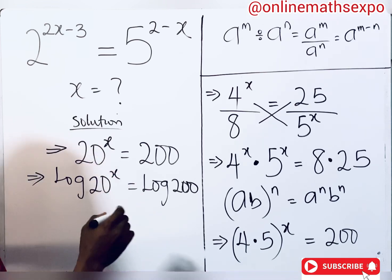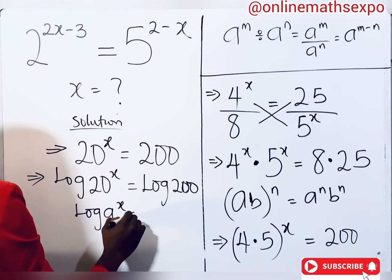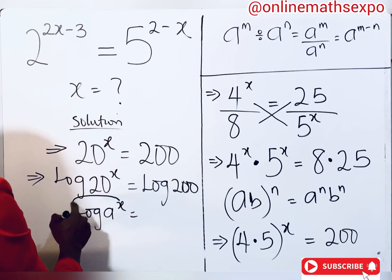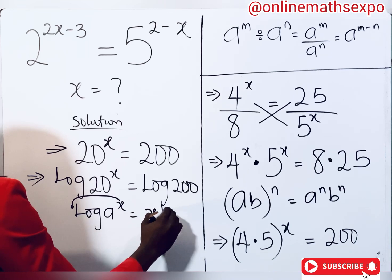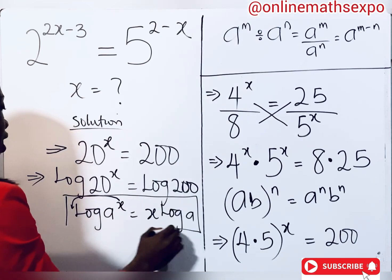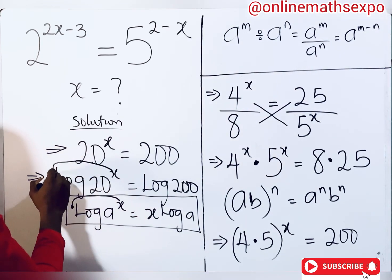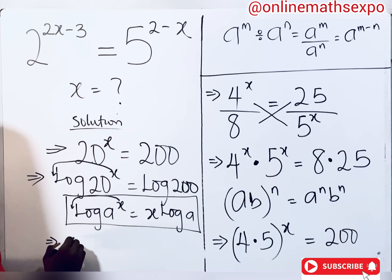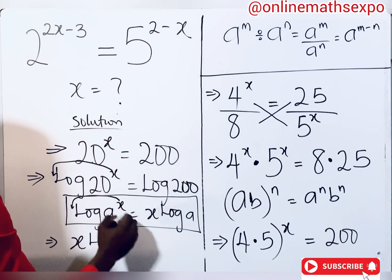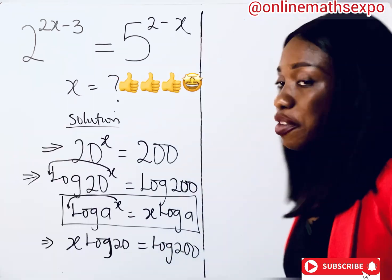Remember the log power rule: if you have log of a to the power of x, you bring the power down to multiply, so it becomes x·log(a). Applying this, we get x·log(20) equal to log(200).